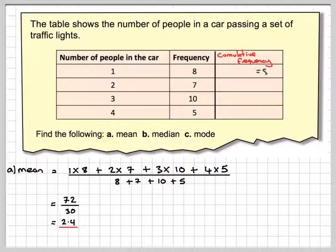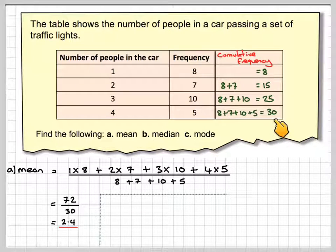So the first one here will be 8. The next one will be 8 plus 7, which is 15. The following one will be 8 plus 7 plus 10, which is 25. And the last one will be 8 plus 7 plus 10 plus 5, which is 30.